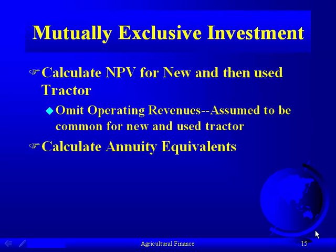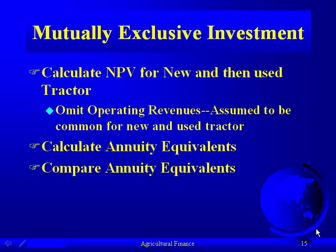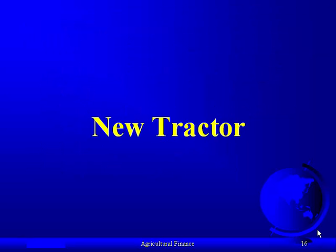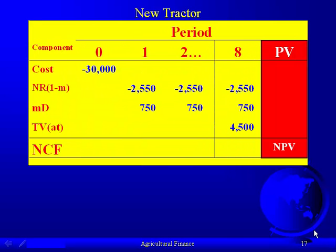After we calculate the net present value, we're going to calculate the annuity equivalents so we can determine which is better by comparing those annuity equivalents. We're going to start with the new tractor. The third step of capital budgeting is to lay out the cash flows using our traditional capital budgeting worksheet where we divide up the net present value into its components.